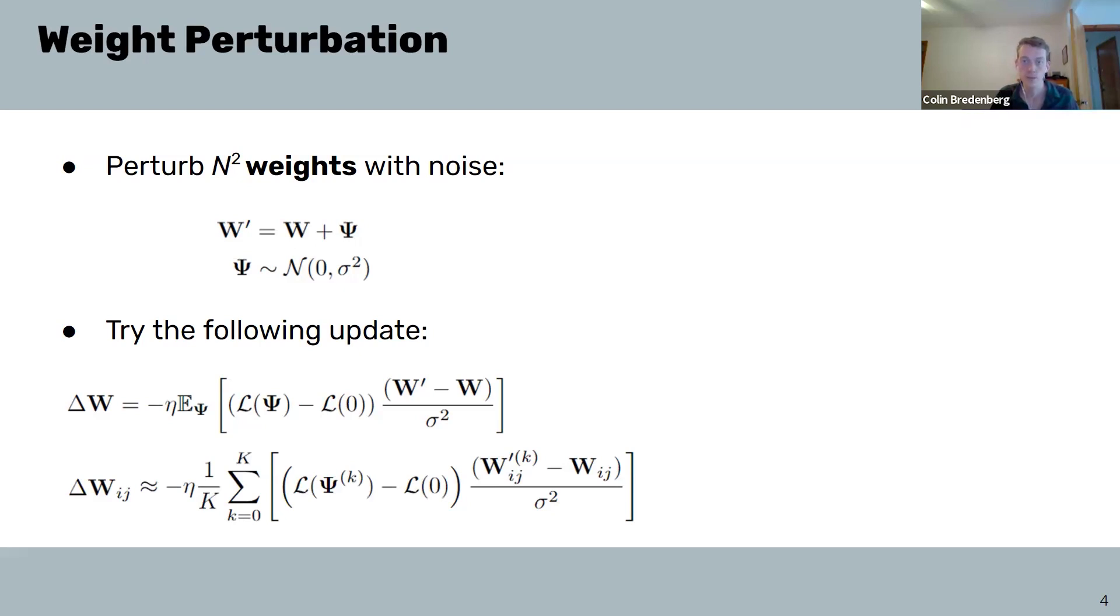And it's worth noting that far less information is required to perform the synaptic update. We only need access to scalar information about the performance, which is known to be encoded by neuromodulatory signals like dopamine, which is known to modulate synaptic plasticity in the brain, and the strength of the synapse itself, which is information locally available to any individual synapse. Now that we have our update rule, why should we expect it to work?